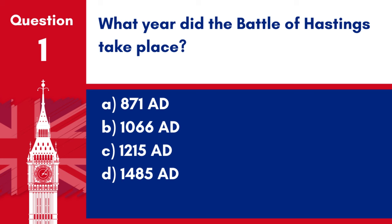Question 1. What year did the Battle of Hastings take place? a. 871 A.D. b. 1066 A.D. c. 1215 A.D. d. 1485 A.D. Answer: b. 1066 A.D. The Battle of Hastings, marking the beginning of the Norman Conquest of England, took place in 1066 A.D.